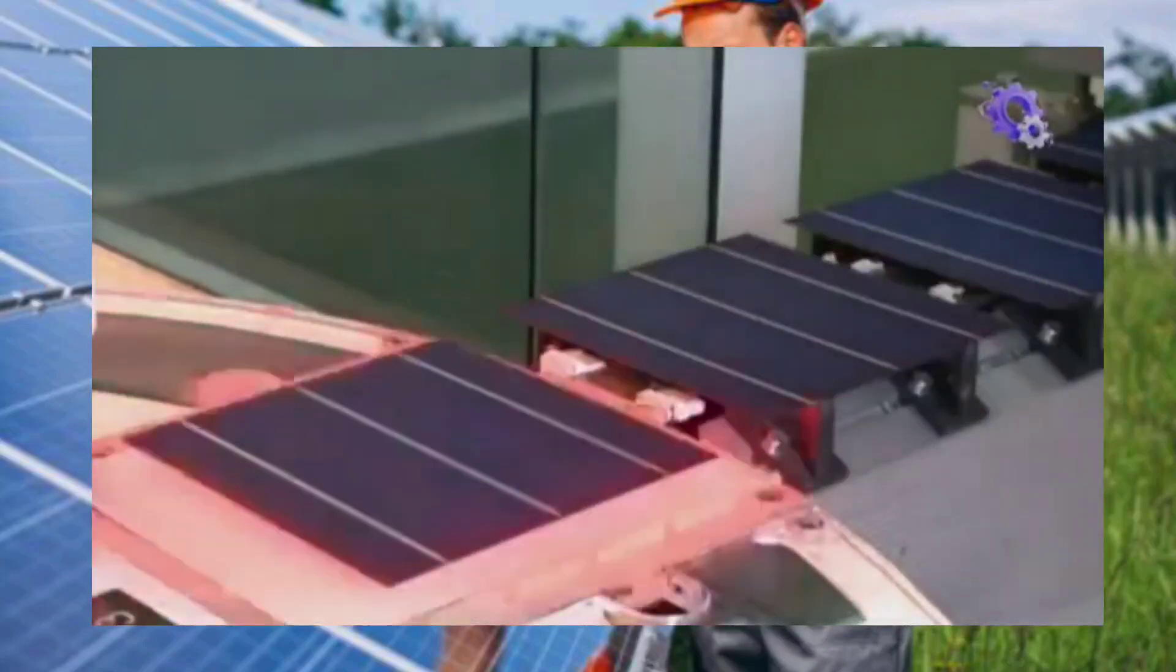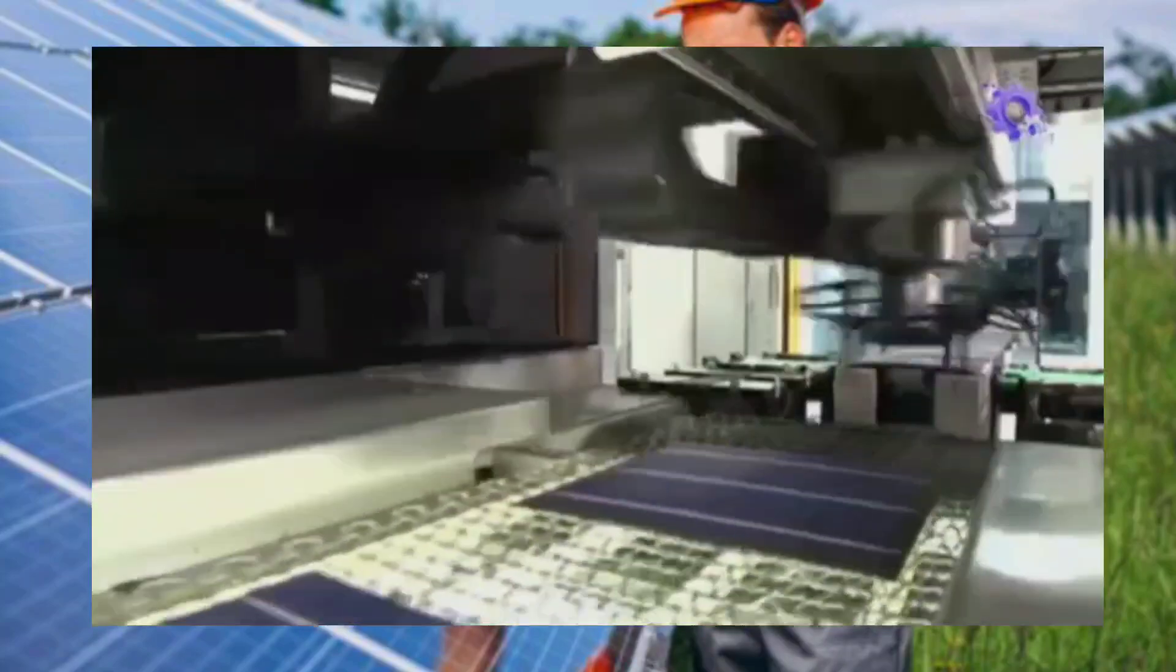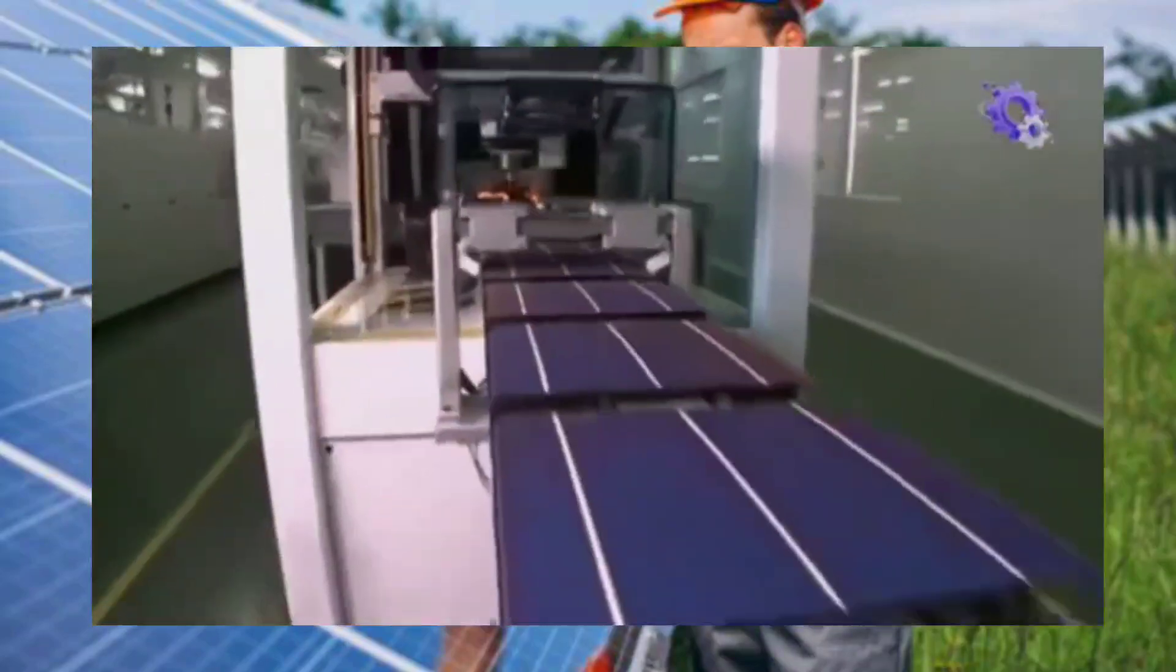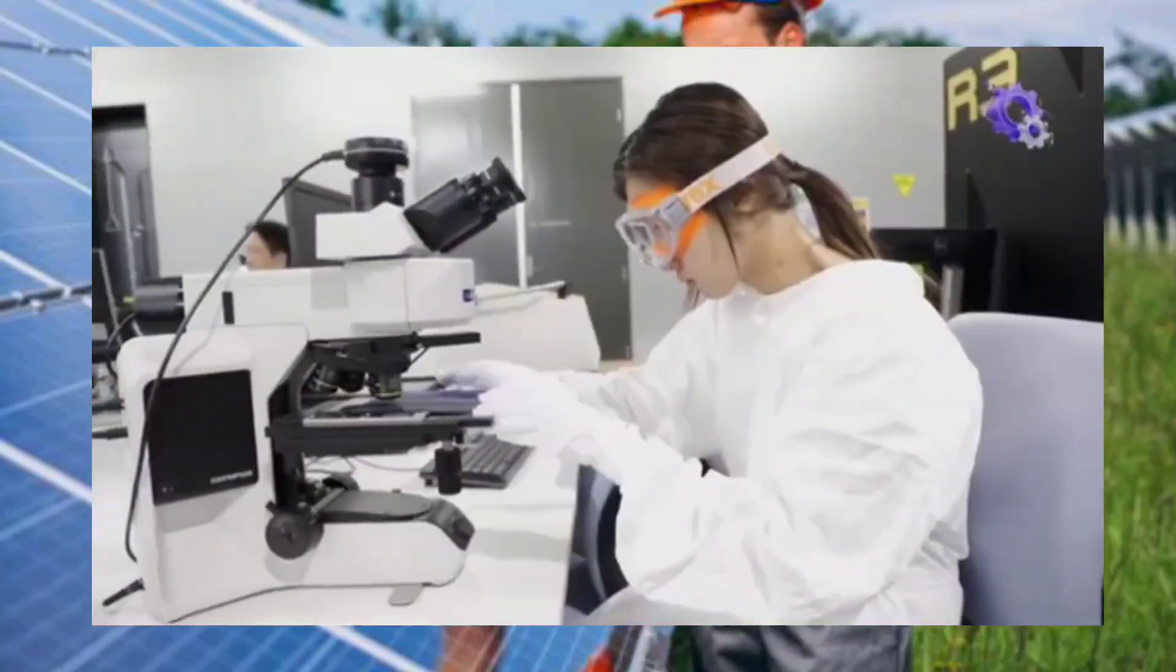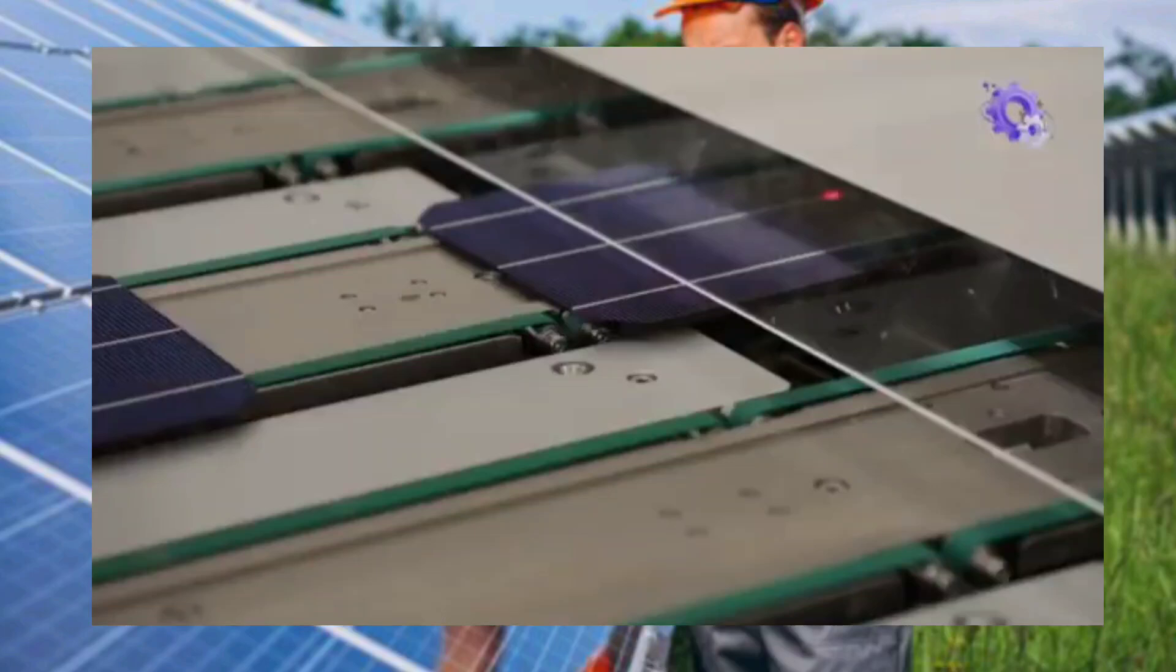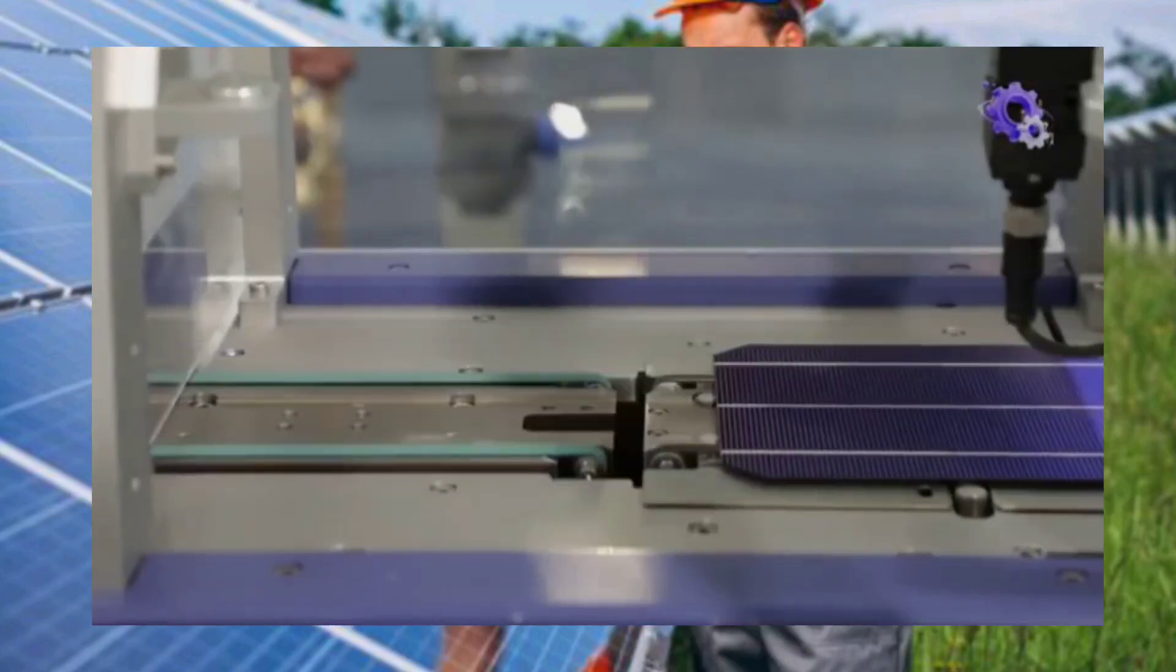The wafer is then treated in a high-temperature furnace, where phosphorus is diffused into the surface to create a negative electrical charge. This, combined with the boron-doped region, forms the essential P-N junction necessary for solar cell operation.